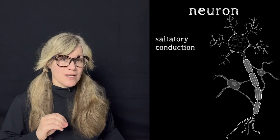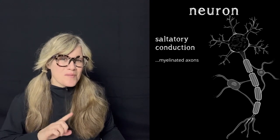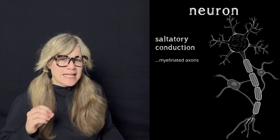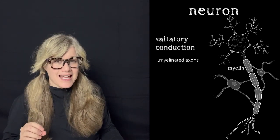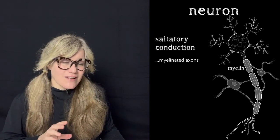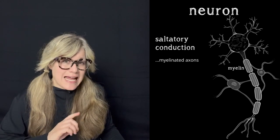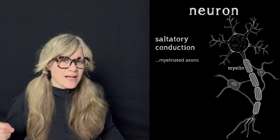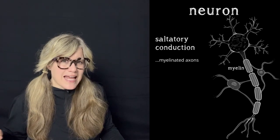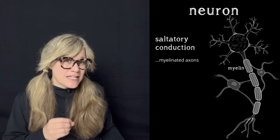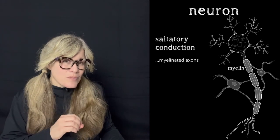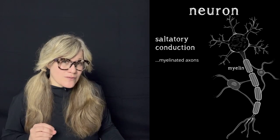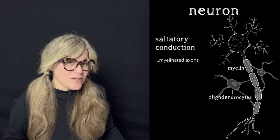Saltatory conduction involves myelinated axons. Our example of a multipolar neuron is covered in a fatty substance called myelin, which acts as an insulator. Ions cannot pass into or out of myelin, as there are no ion channels in myelin. In the peripheral nervous system, these myelin cells are called Schwann cells; in the central nervous system, they're called oligodendrocytes. Since our sample neuron is in the central nervous system, we'll continue the journey of the action potential as though the myelin is oligodendrocytes.